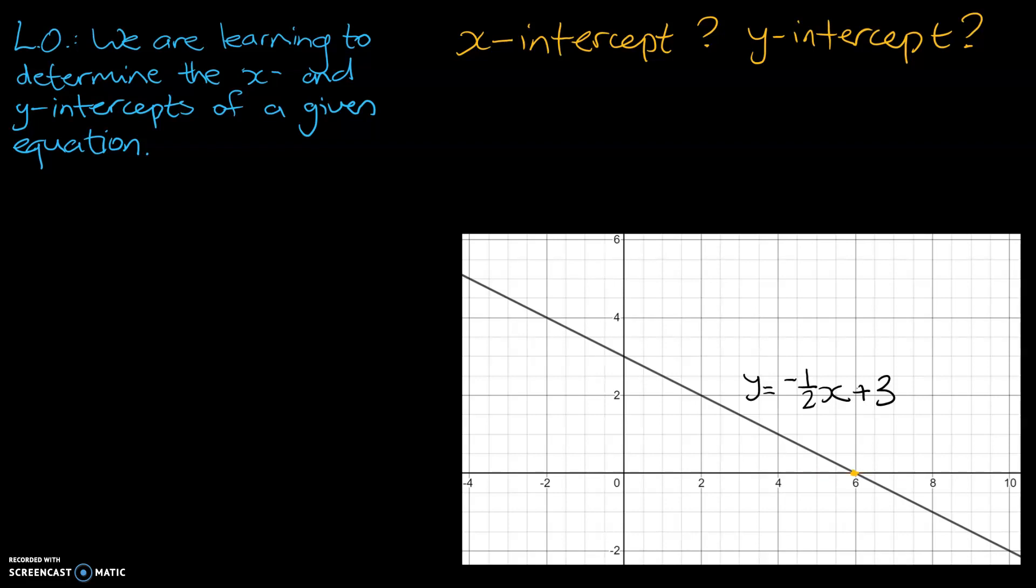So that there would be our x-intercept. And similarly, the point up here, that is where our straight line intercepts our y-axis, so that's where they touch each other, which makes that point our y-intercept.